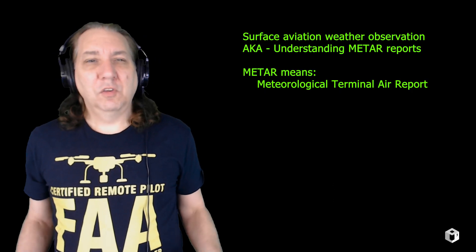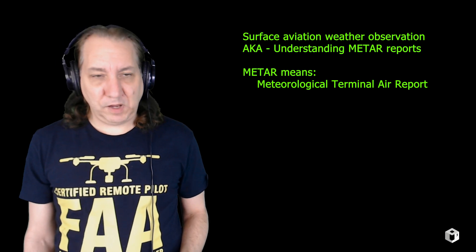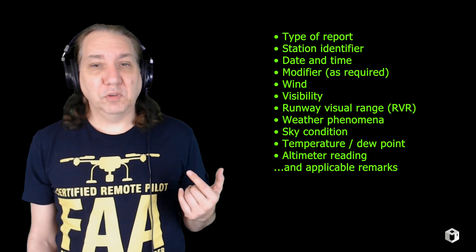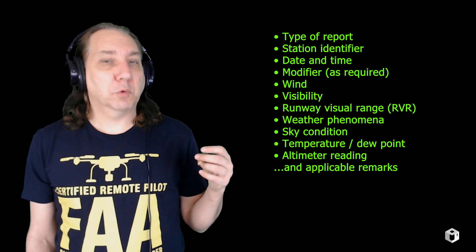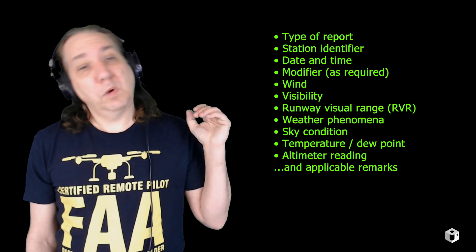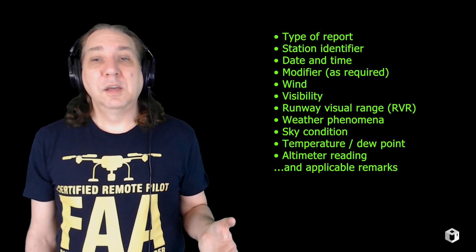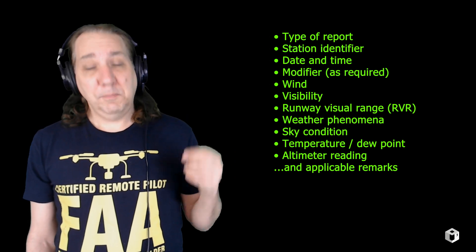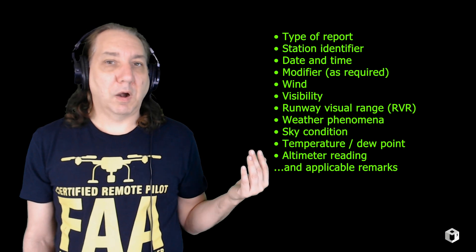Why you came here: Surface Aviation Weather Observation. It includes the type of report, the station identifier, the date and time, the modifier as required, wind, visibility, runway visual range in some cases, weather phenomena, sky conditions, temperature, dew point, altimeter reading, and applicable remarks.